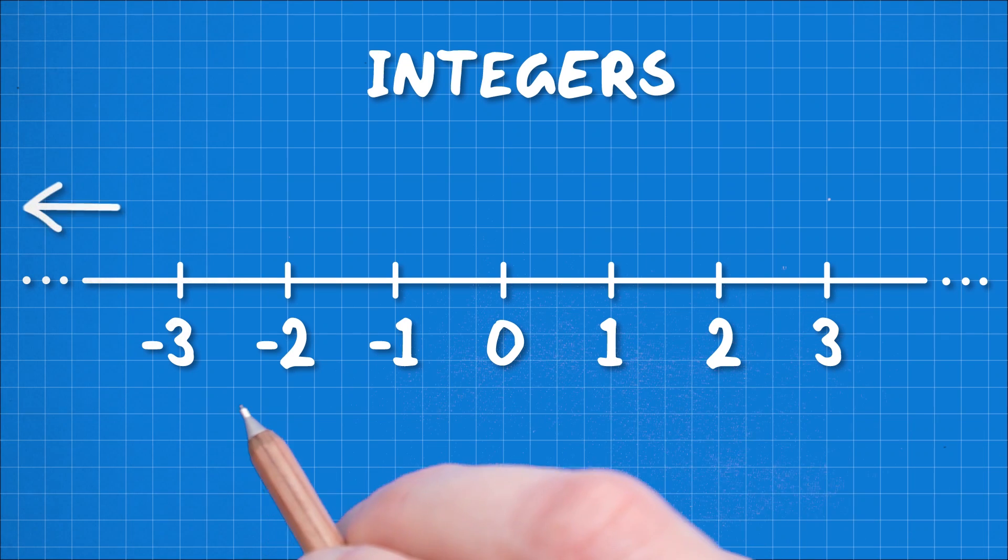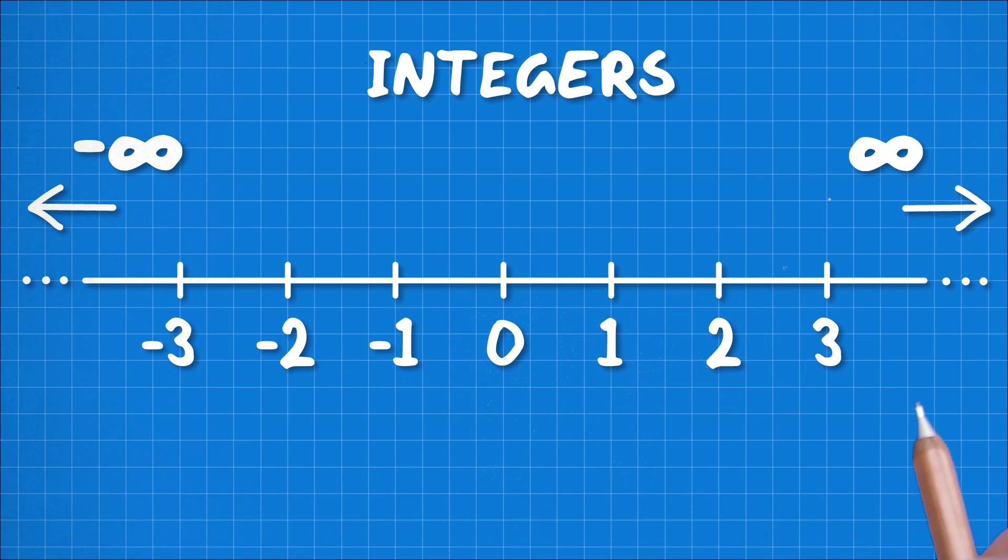This goes from minus infinity up to positive infinity. This contains all of the whole numbers, we call these the integers, and this list of numbers is endless in both directions because whatever big number you get to, you can always just add one to it, and so it never ever ends.